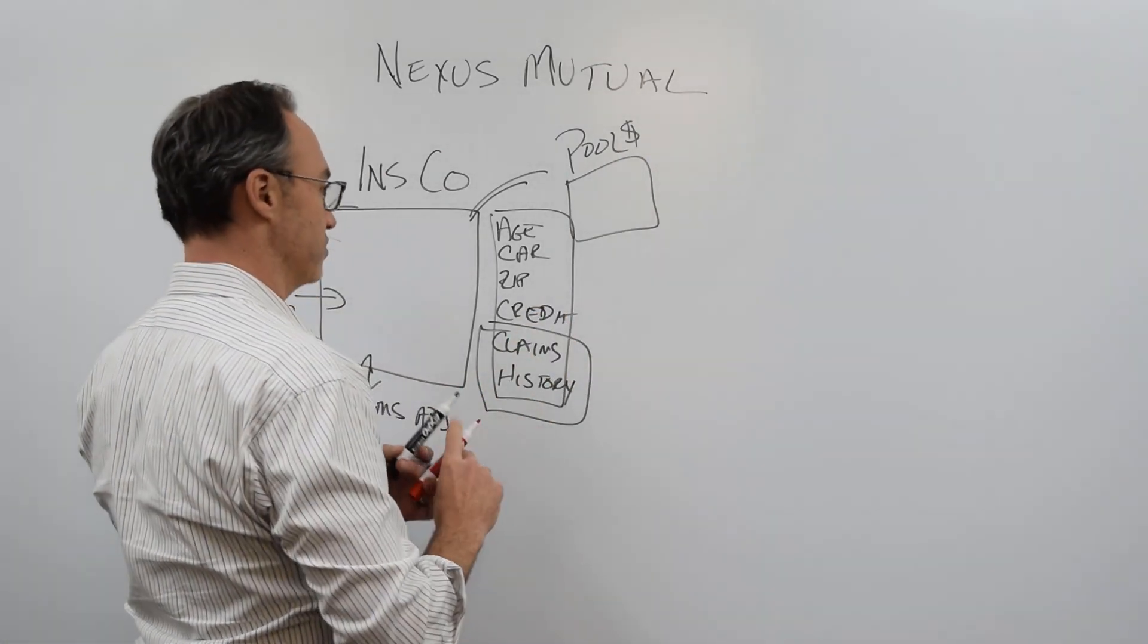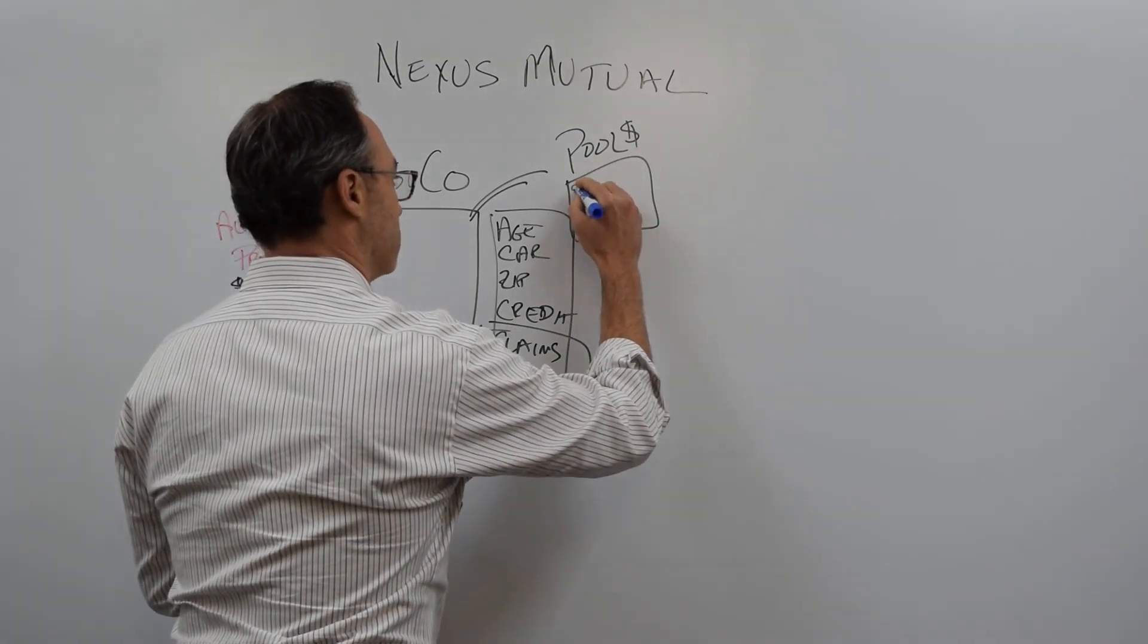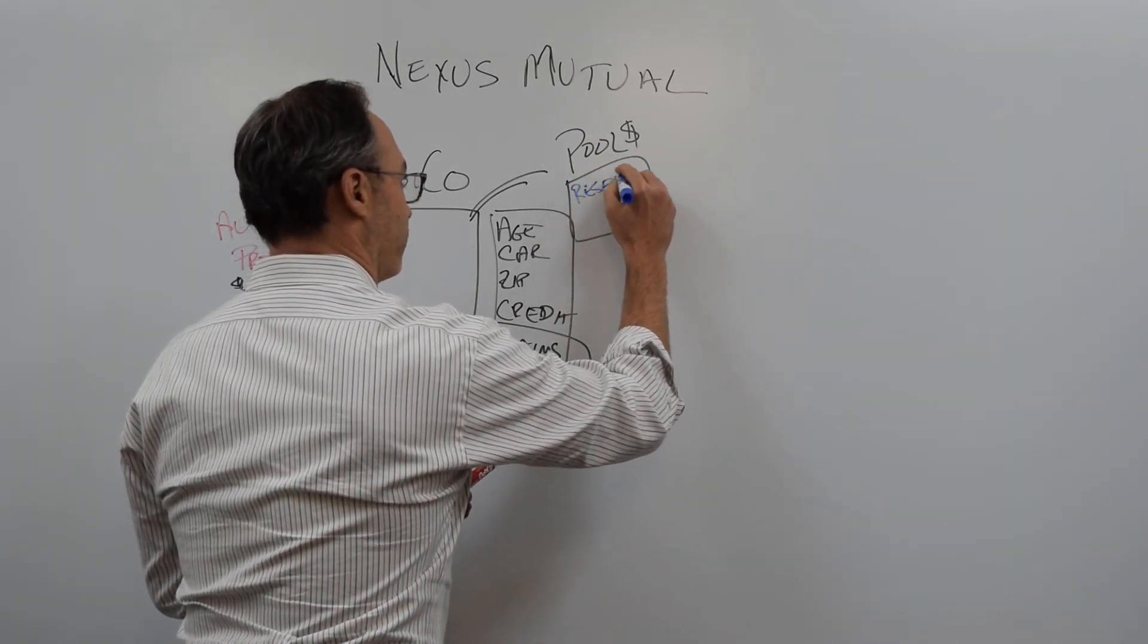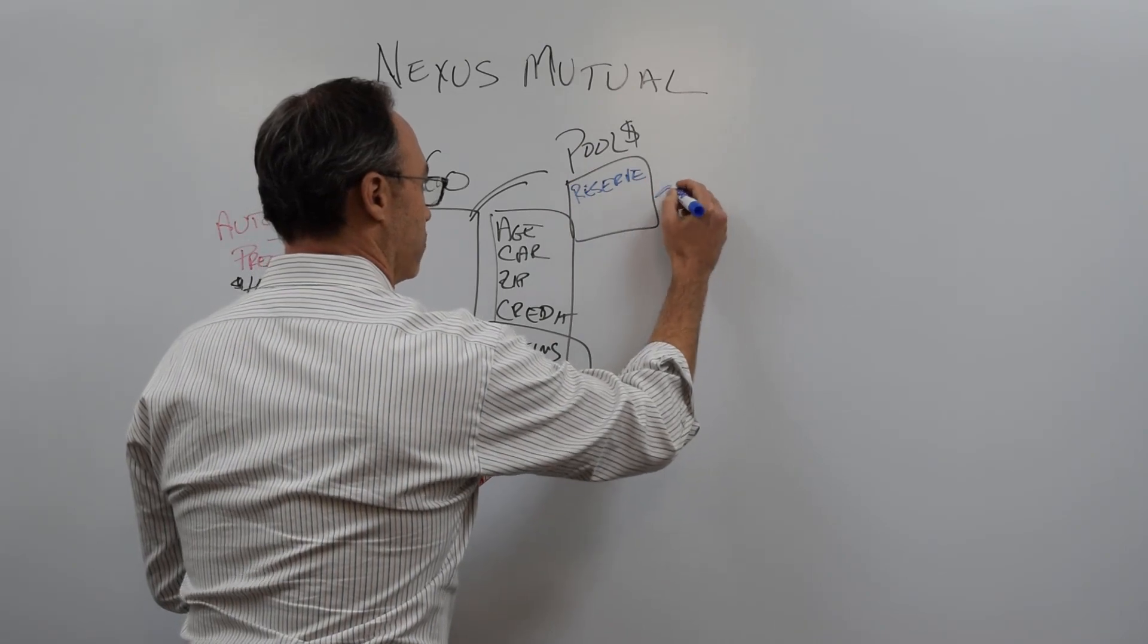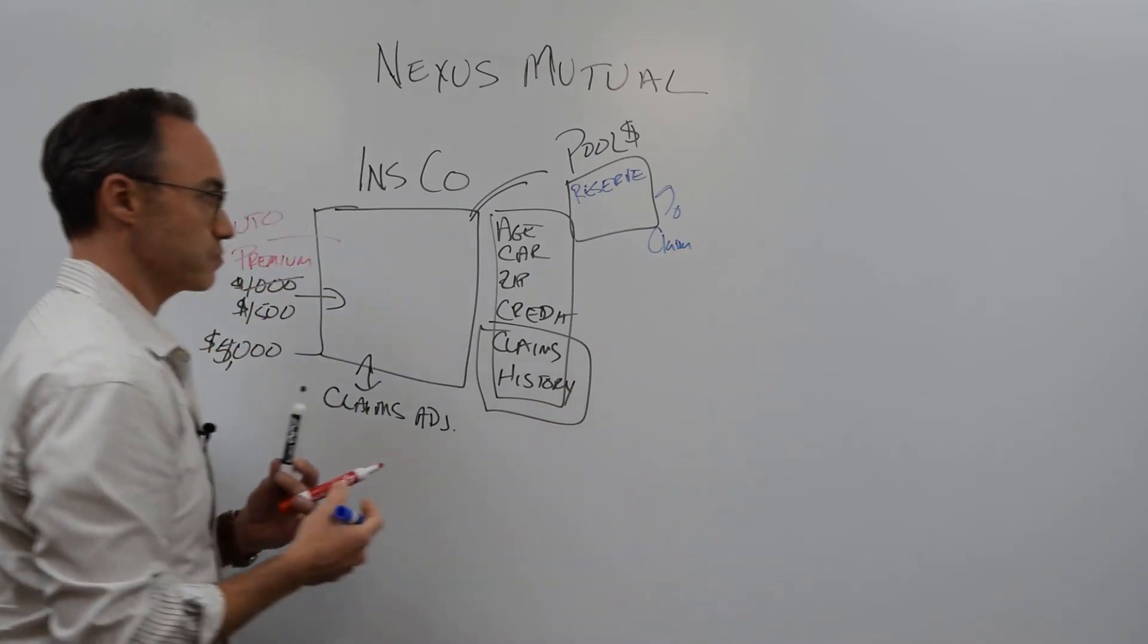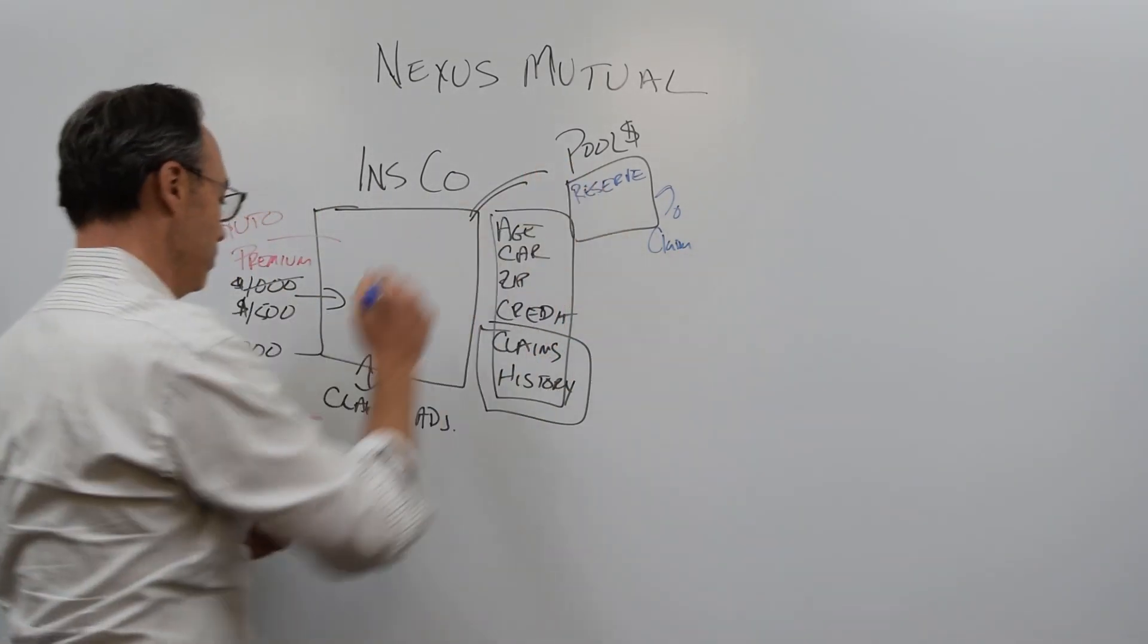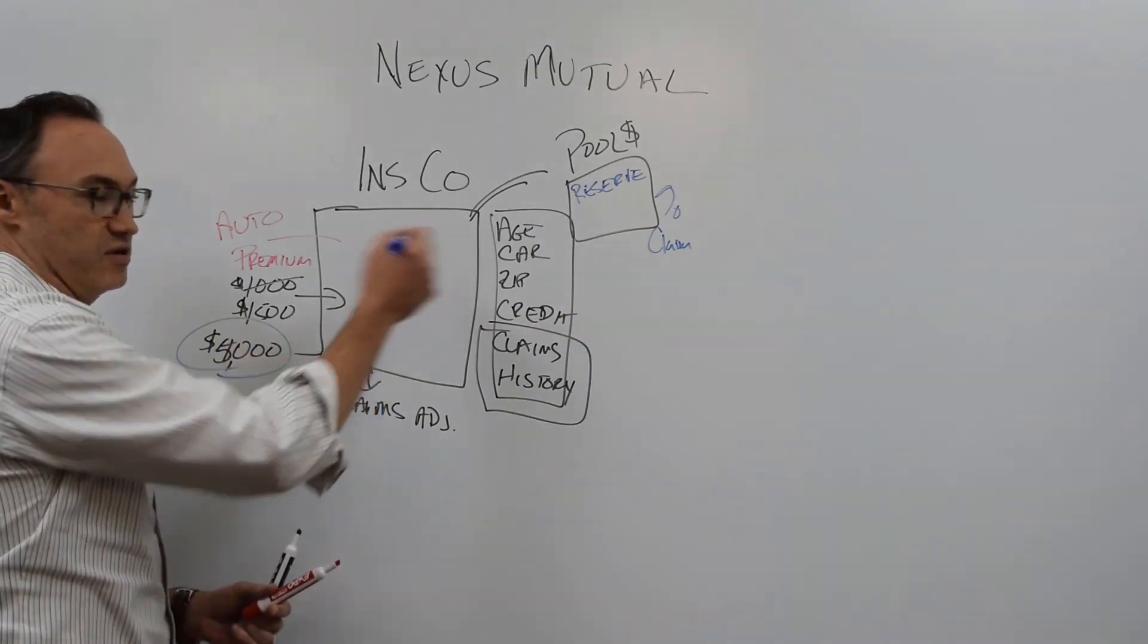Now, all this money that I pay in premiums goes potentially into this pool of money with everyone else who's paying auto premiums. The insurance company has to keep some level of reserve here because they have to assess at any one point what is the percent chance that there's any sort of claim activity. They have to make sure that they have enough cash available to pay claims at any time.